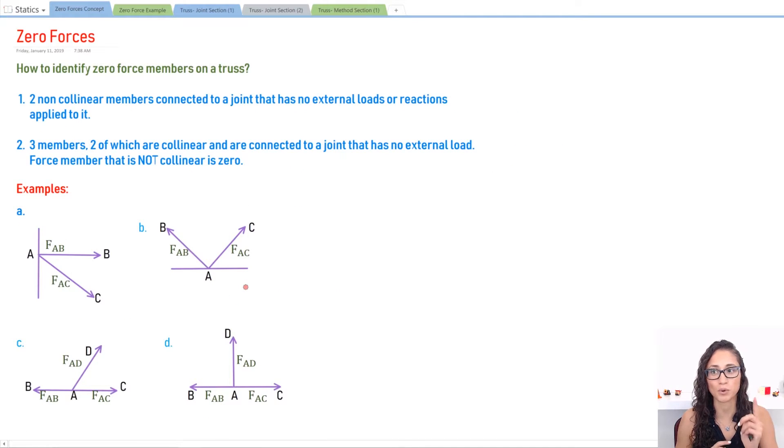So concept number one: we have two non-collinear members connected to a joint that has no external loads or reactions applied to it. Now note that these two examples apply to concept one and these two apply to concept two. Now let me explain this a little bit.